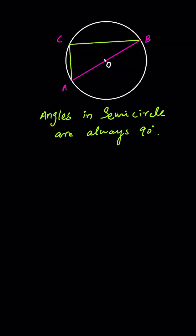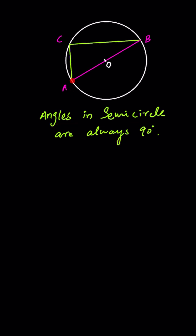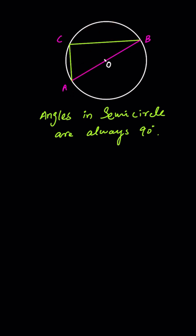Hello guys, welcome to Engineers Academy. Let's prove that angles in a semicircle are always 90 degrees. Whenever there is an angle made in a semicircle, that will always be equal to 90 degrees. Any angle made from the diameter of a circle will always be equal to 90 degrees. So let's prove that angle BCA is 90 degrees.